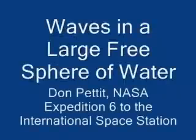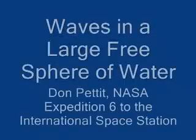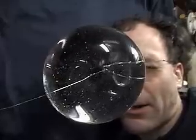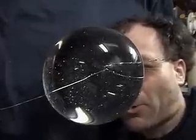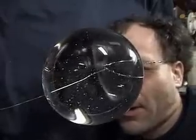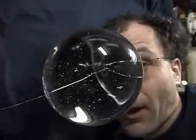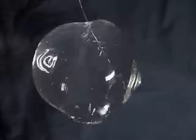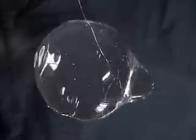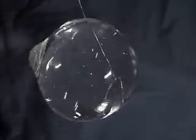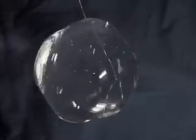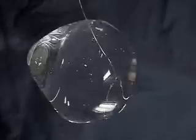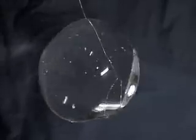Waves in a large free sphere of water. Here we have a large free sphere of water about the size of my head, 130 millimeters in diameter, and we put a puff of air — 10 cc's in 100 milliseconds — radially directed in from the side and look at the resulting waves.